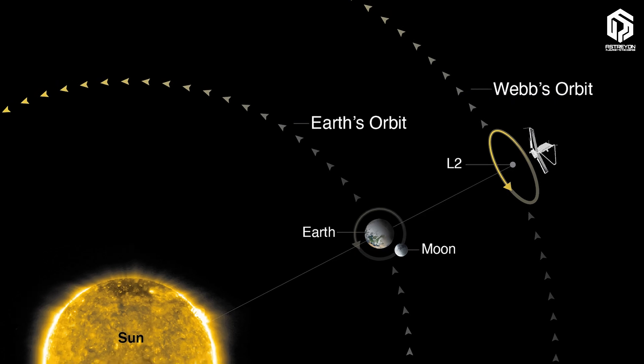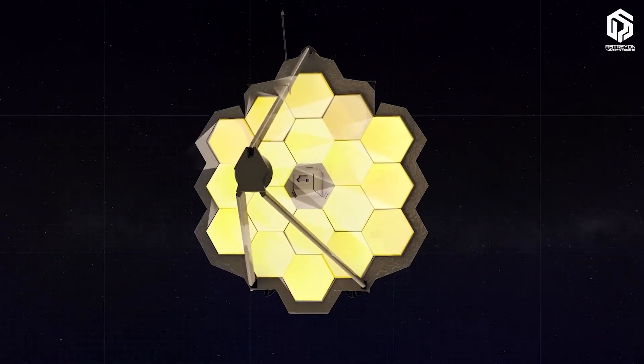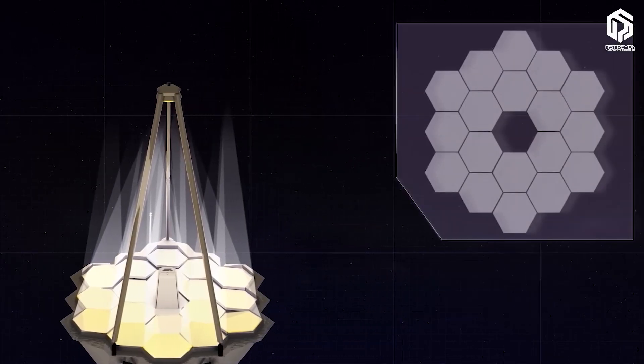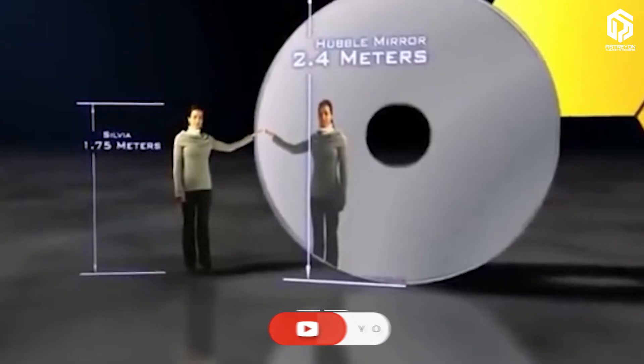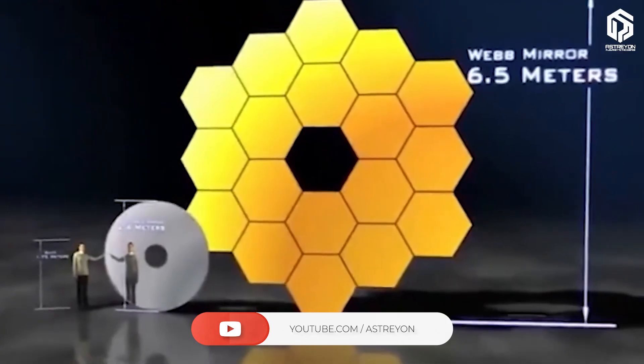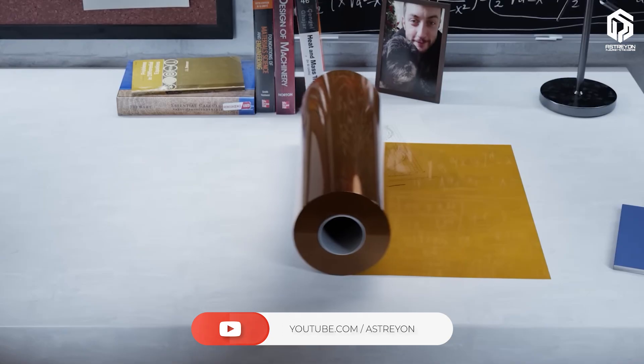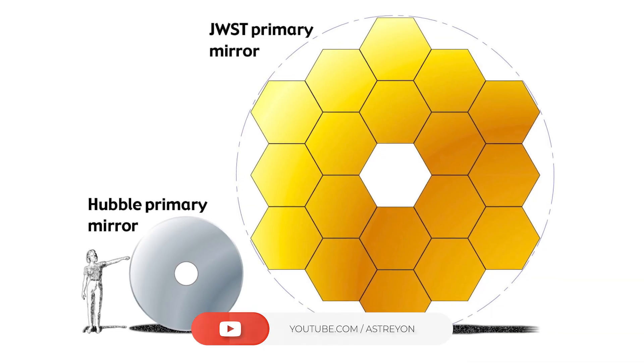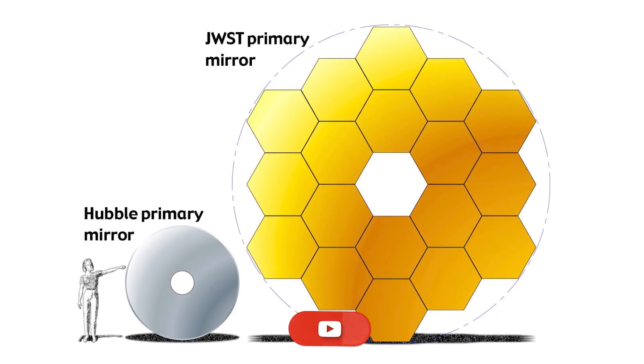Its primary mirror, with a 6.5 meter diameter made of beryllium coated in gold, is six times larger than Hubble's and collects light with extraordinary precision.